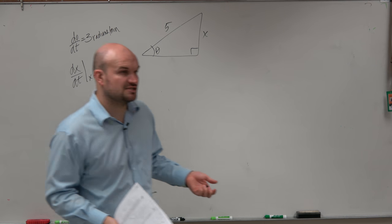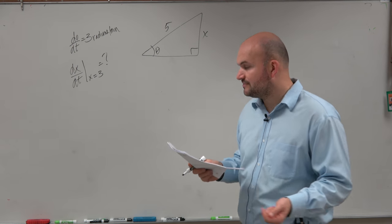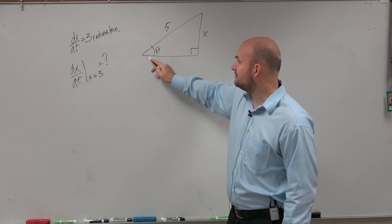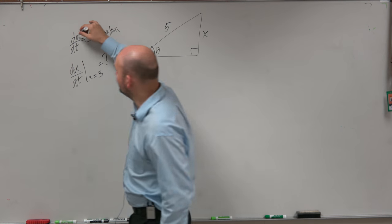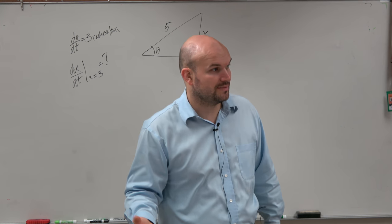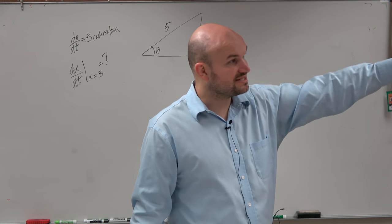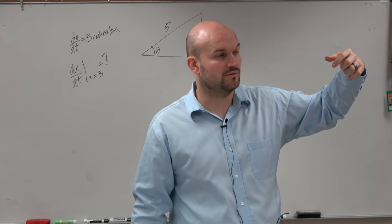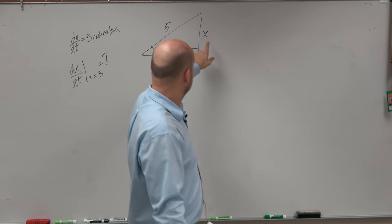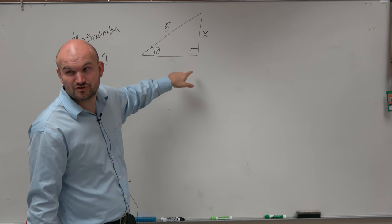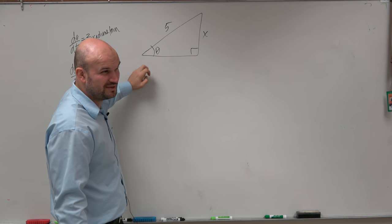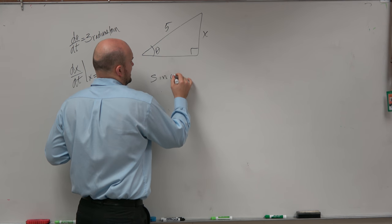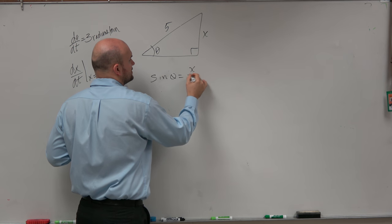So first of all, let's try to look at what relationship that we have in this case. You guys can see, based on this triangle, if we have a d theta dt, we want to include theta in our relationship, right? We have the opposite side and the hypotenuse. So therefore, we want to include these two side lengths and theta. So the best trigonometric ratio we should use would be sine, right? So we're going to say sine of theta equals opposite over hypotenuse.